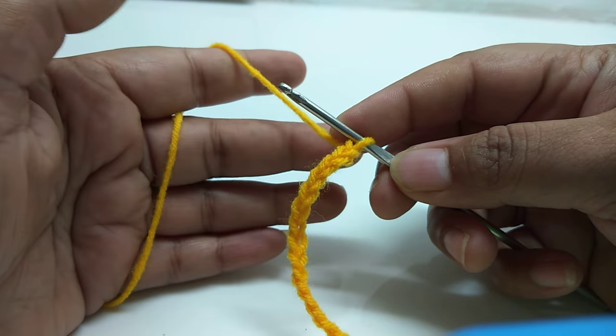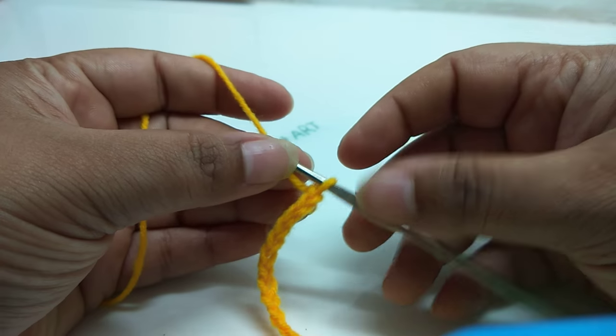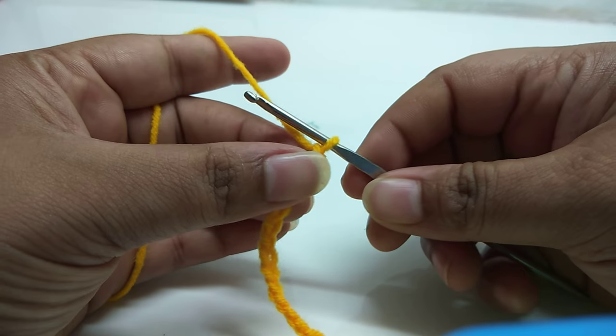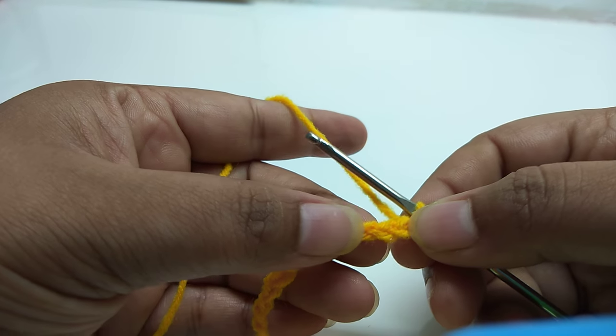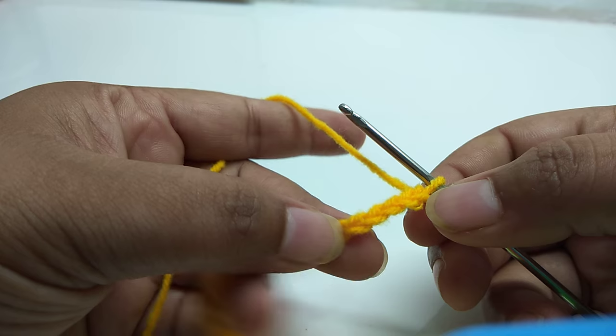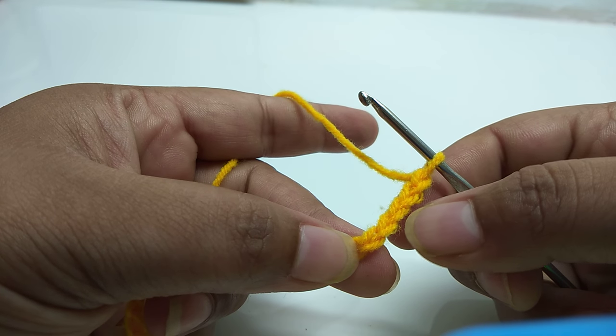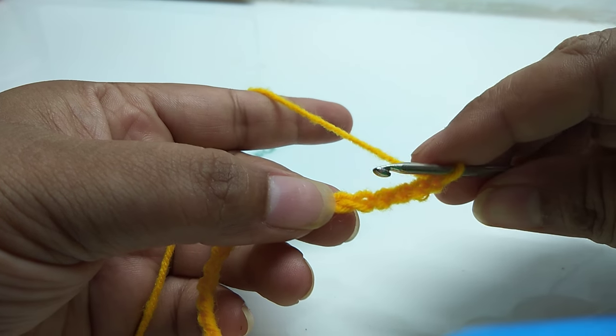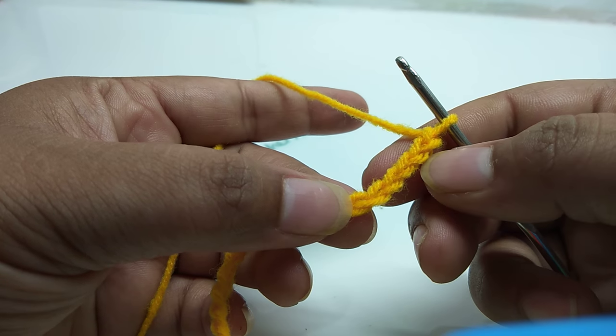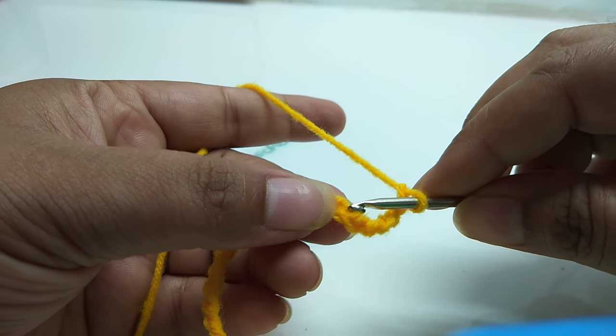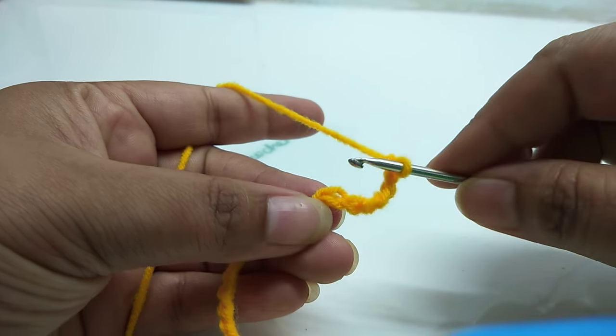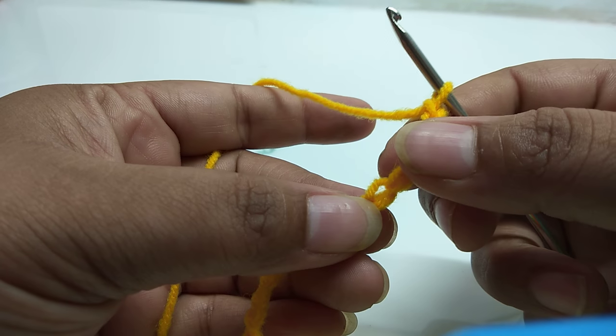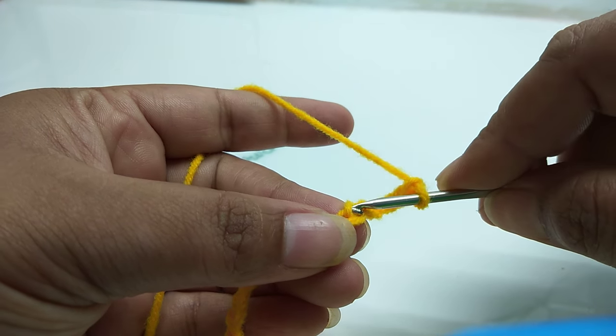Meanwhile, also observe the holding techniques of the full yarn, as well as the holding techniques of this hook. To work slip stitch, insert your hook after skipping four chain stitch: one, two, three, and four. So skip the four chain stitch, one, two, three, and four, and in the fifth chain insert your hook.